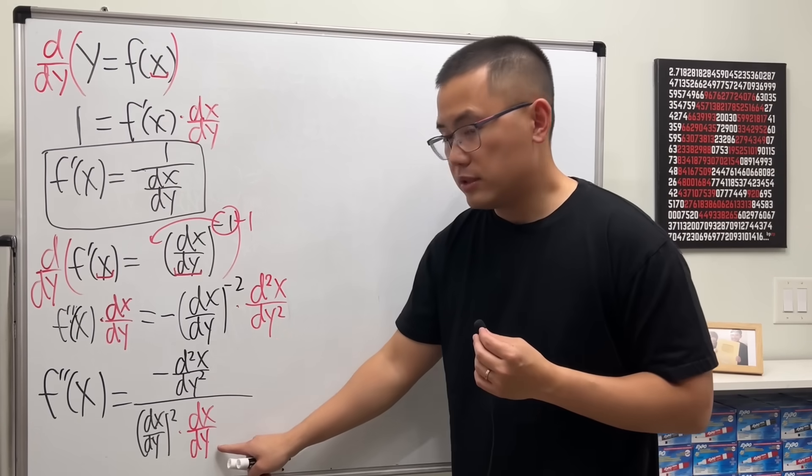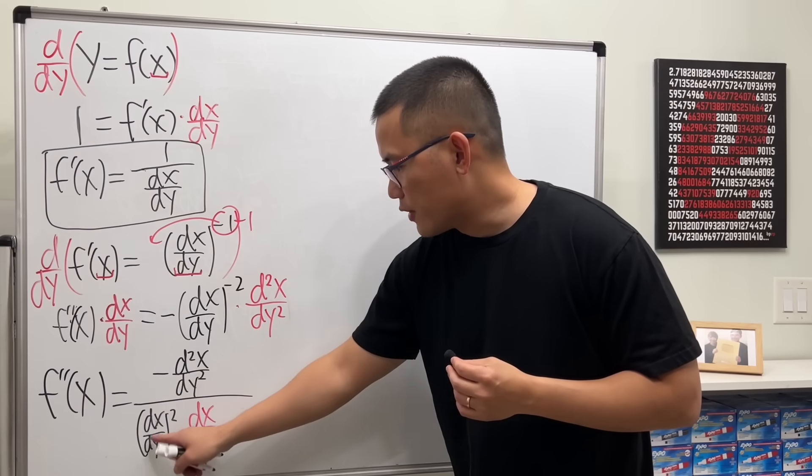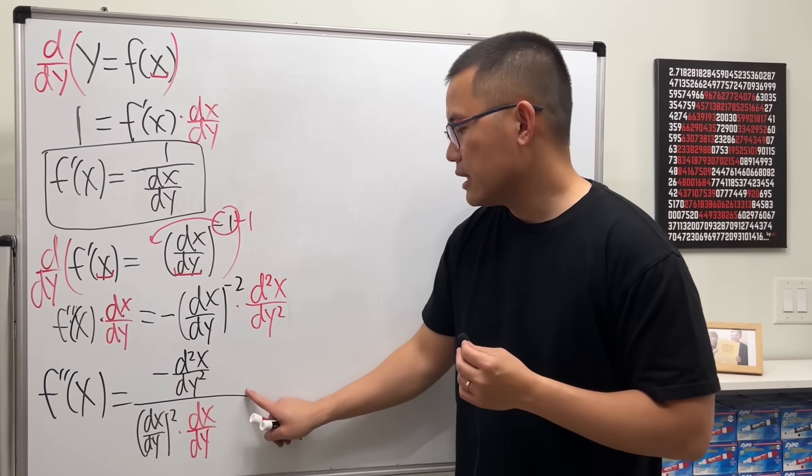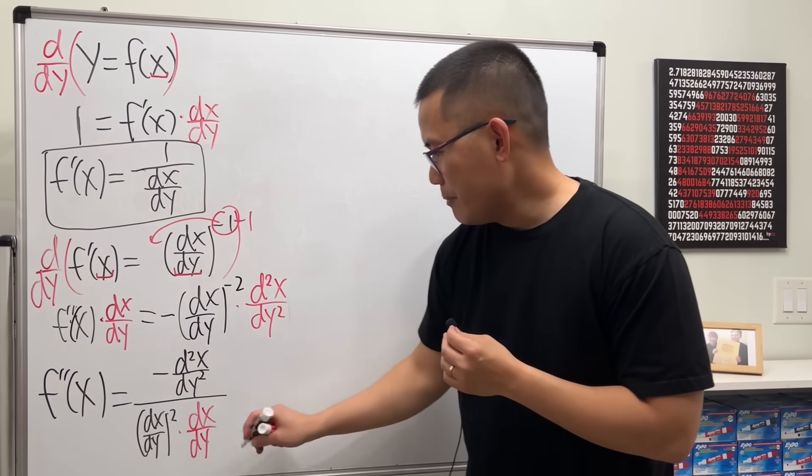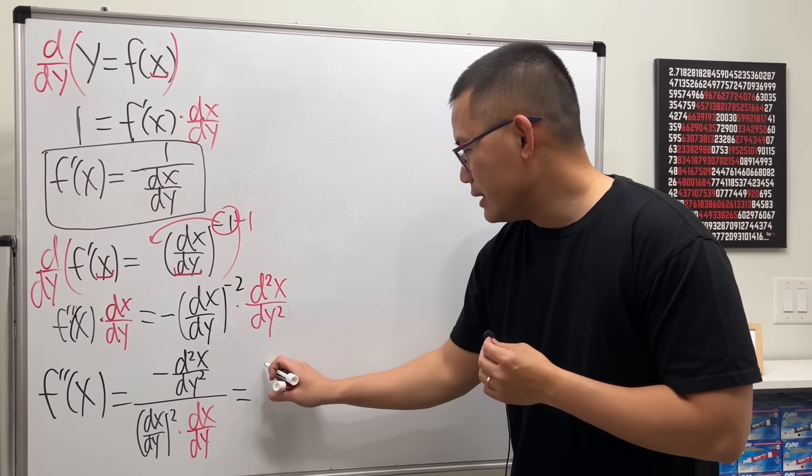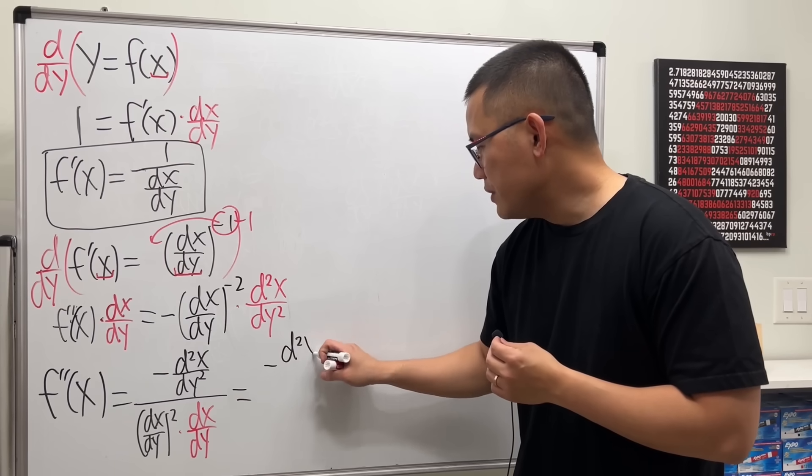First squared though, and then this right here also goes to the bottom. Notice this is just the first derivative, this is the first derivative, and then you square that, so altogether we have three of this on the bottom.